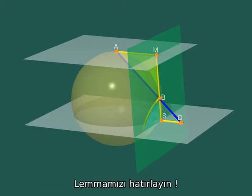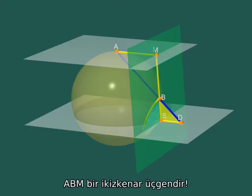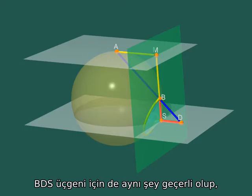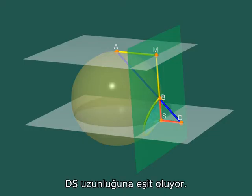Now, remember our lemma. The triangle A-B-M is isosceles. Hence, the same is true for the triangle B-D-S, so that B-S has the same length as D-S.